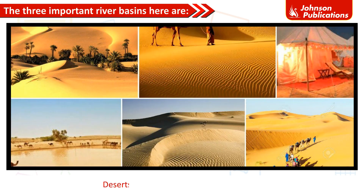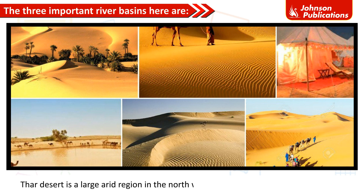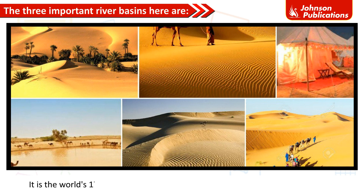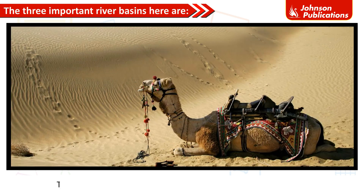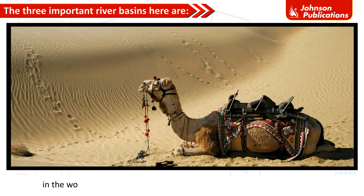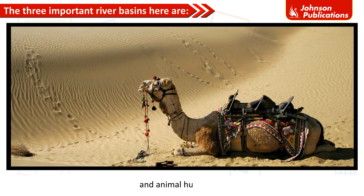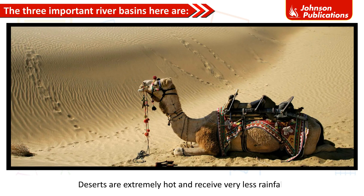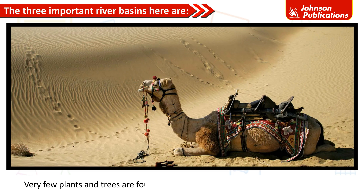The Great Indian Desert, named the Thar Desert, is a large arid region in the northwestern part of the Indian subcontinent. It is the world's 17th largest desert and the world's 9th largest subtropical desert. It is one of the most densely populated desert areas in the world, with agriculture and animal husbandry as the main occupations. Deserts are extremely hot and receive very little rainfall, with only thorny bushes and cactus growing here.